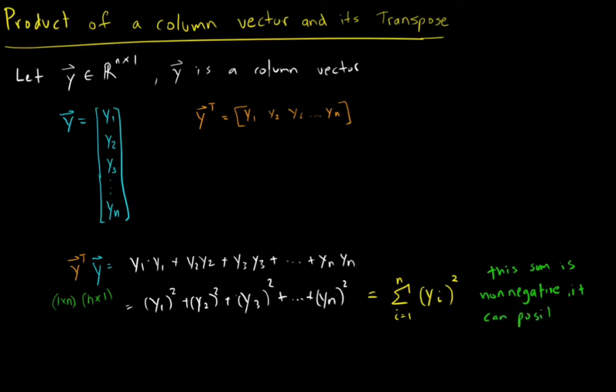We're going to use this fact for the next proof. So if I want to clean it up a bit more, I can write it as: the sum from i equals 1 to n of yᵢ squared is greater than or equal to zero.